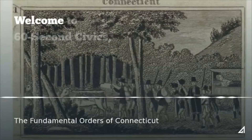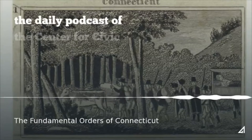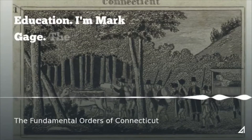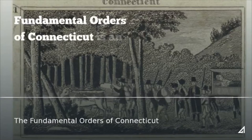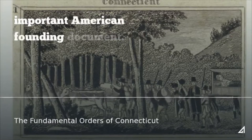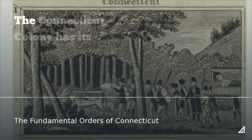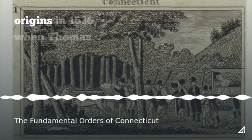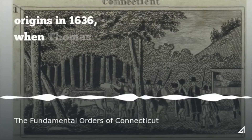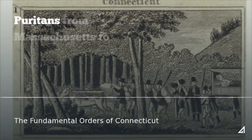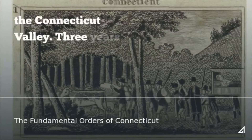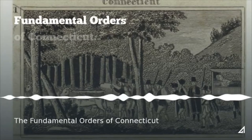The Fundamental Orders of Connecticut is an important American founding document. The Connecticut colony has its origins in 1636 when Thomas Hooker led a group of dissenting Puritans from Massachusetts to the Connecticut Valley. Three years later, these settlers adopted the Fundamental Orders of Connecticut.